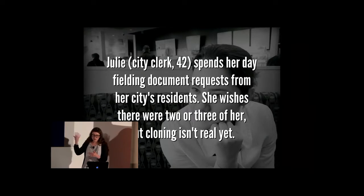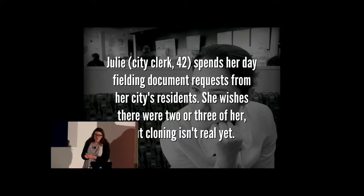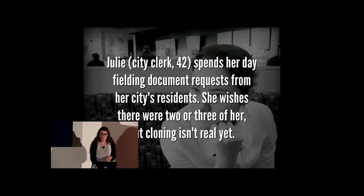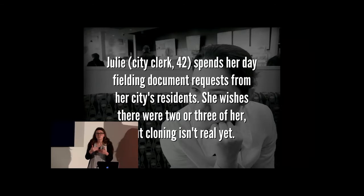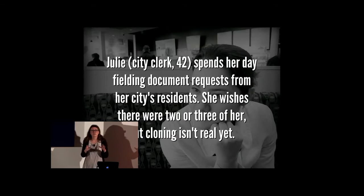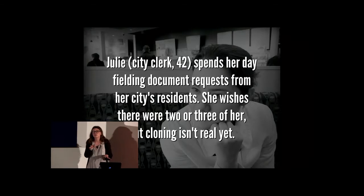This defines who the user is — giving them a name (Julie), their work function (city clerk), how old they are (42), what they do (public interaction and fulfilling requests), and their main obstacle (not having enough people to get the job done). It might seem a little silly to give your end user a name and age, but it's a technique to help you better interact with this imaginary person — maybe a composite based on a bunch of interviews with actual customers. You can even find a stock photo. It's just a way for a human to interact better with a human.